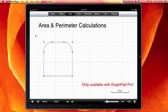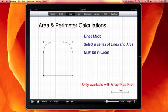In order to calculate an area, users must be in line mode. They must select a series of lines and arcs. These lines and arcs must be in order, and they must form a closed shape.